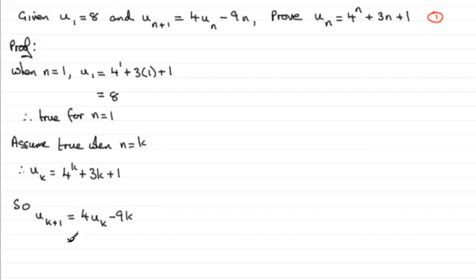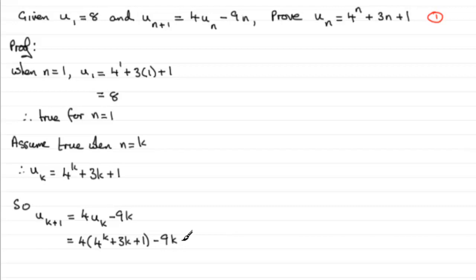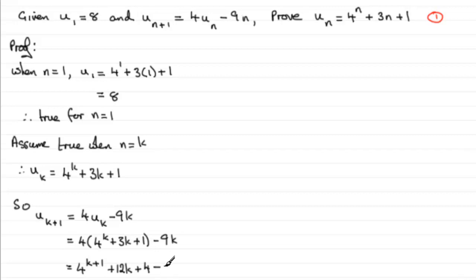Substituting our assumption for u(k), we get u(k+1) = 4(4^k + 3k + 1) − 9k. Expanding: 4 × 4^k gives 4^(k+1), then 4 × 3k gives +12k, and 4 × 1 gives +4, and finally we have −9k.